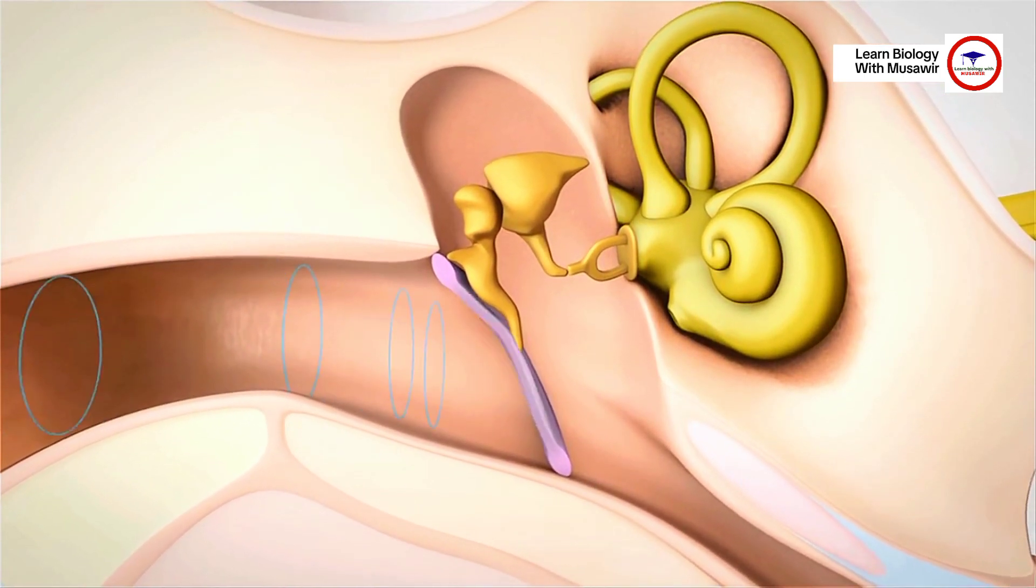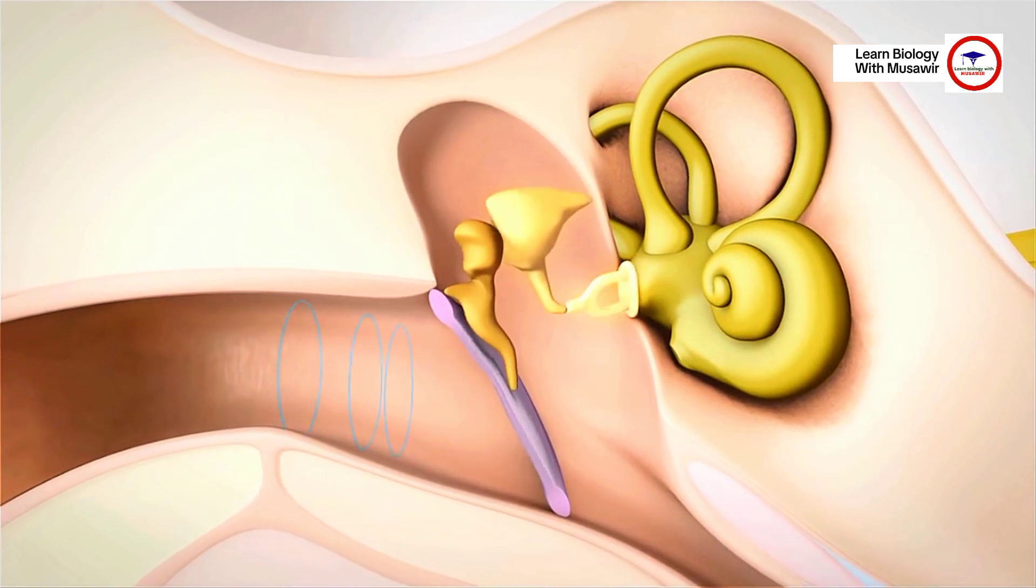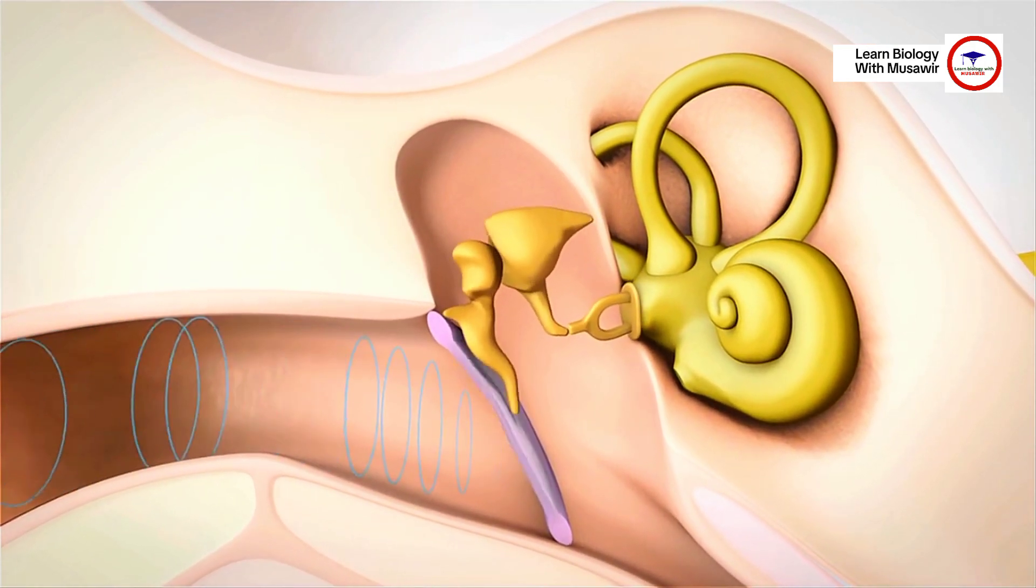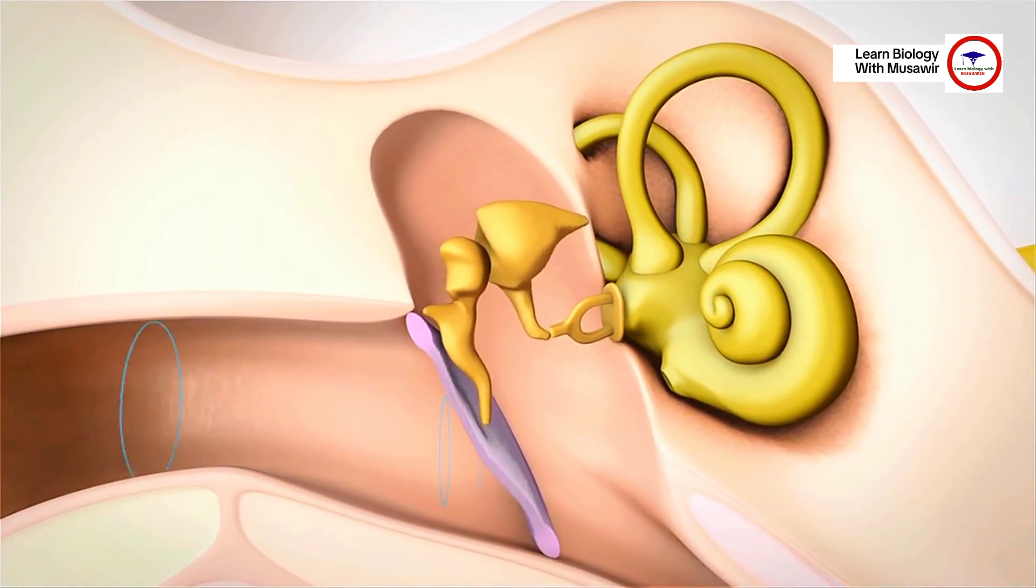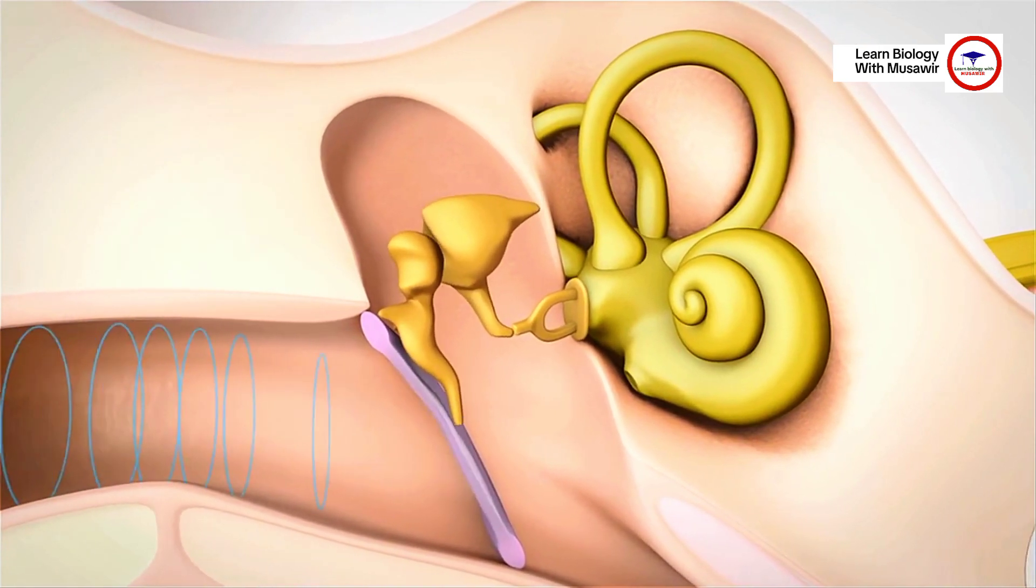The ossicular chain consists of the hammer, anvil, and the stirrup. Sound vibrations move along the ossicular chain and into the inner ear.